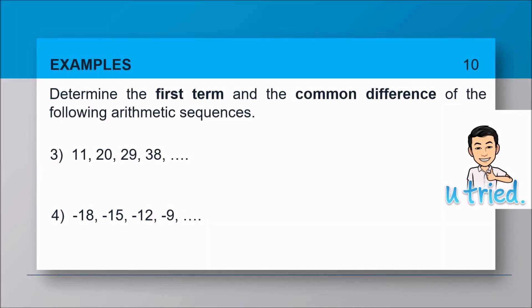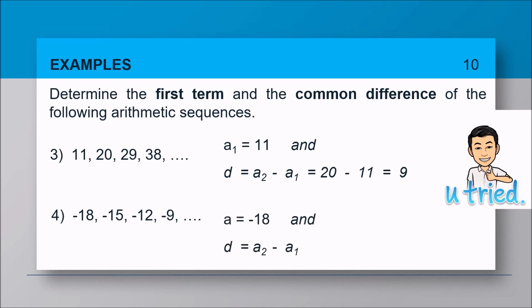Pause the video and check your answers later. For number three, the first term is 11 and the common difference is positive 9. For number four, the first term is negative 18 and the common difference is positive 3. Be careful with the rules of signs, and you can use any two consecutive terms — not just the first and second — provided the sequence is already confirmed as arithmetic.